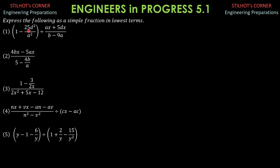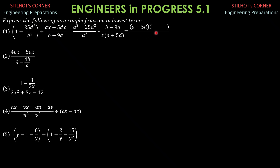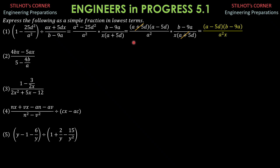Problem 1: This is equal to a² minus 25d² over a², then times the reciprocal of the denominator — so times b minus 9a over x times a plus 5d. We write this in factored form. The numerator is a difference of two squares: a² minus (5d)². The factors are (a + 5d)(a − 5d) over a², times b minus 9a over x times a plus 5d. We can cancel (a + 5d). Therefore, the final answer is (a − 5d)(b − 9a) over a²x.